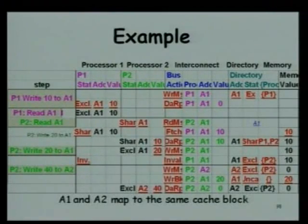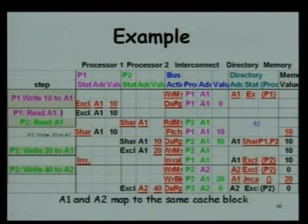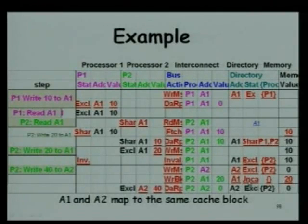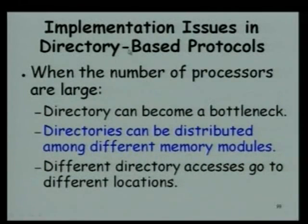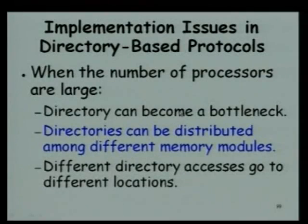We just looked at an example of how the directory-based protocol works. The directory state shown was uncached — the block was not available with anyone. When the number of processors is large, the directory will become large because we maintain one bit for every processor for every page or block. The directory size will become very large as the number of processors increases.